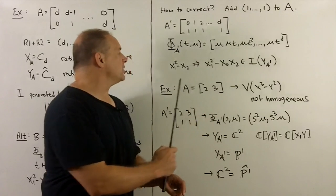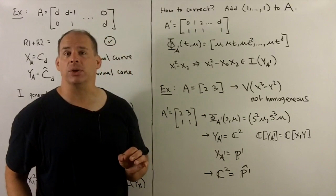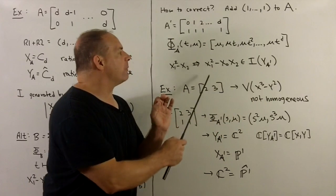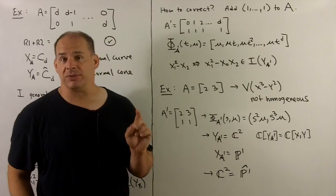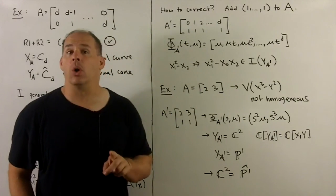Now, this doesn't change our rational normal curve at all, but it will change y sub a. We note, for instance, if we take our generator from before and we had x1 squared minus x2, that's not going to hold anymore. Instead, I have to use x1 squared minus x0 x2, which is now homogeneous of degree 2. So we've turned y sub a into a cone.